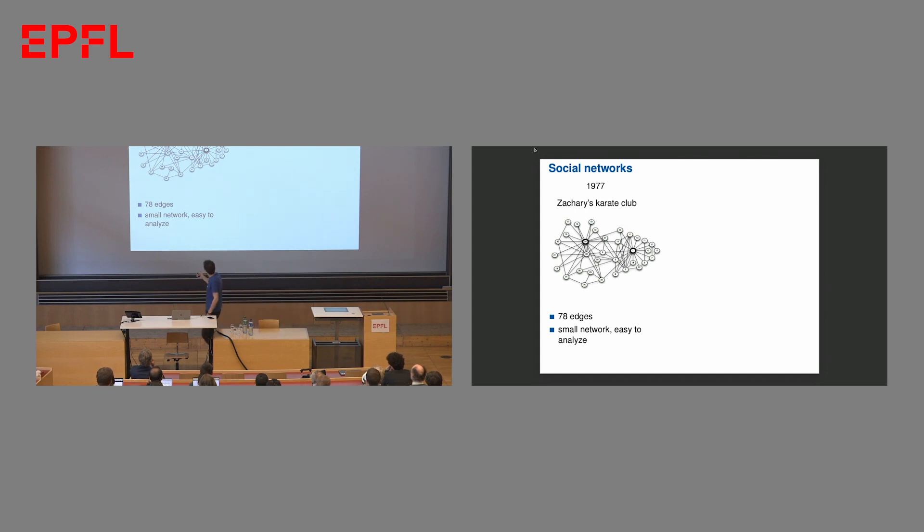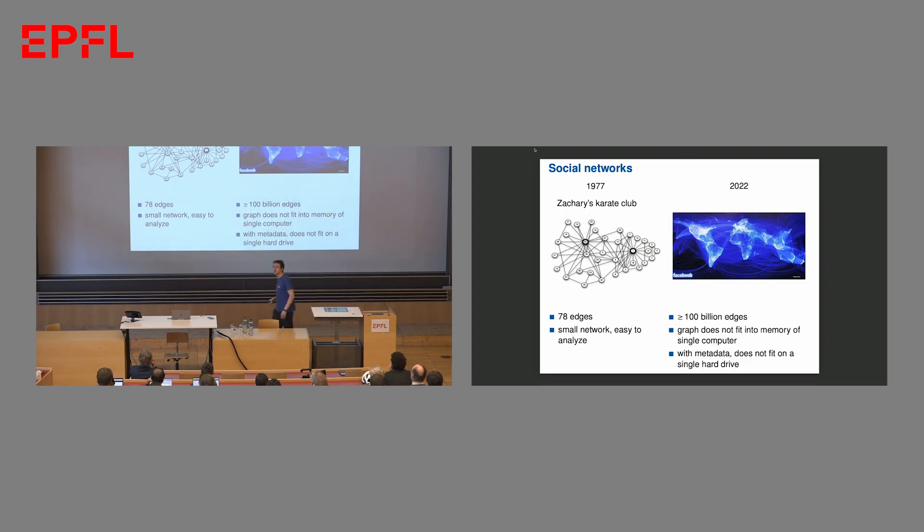When Zachary had to analyze this network in 77, the only thing he had to do is run some max flow min cut computation on this network here. It contains 78 edges. It is not too hard to do this. Just about any algorithm will succeed. But imagine doing this on a social network that is of interest today, like Facebook. It contains a lot of edges and nodes. So it is very challenging to even fit this graph into the memory of a single machine, let alone perform non-trivial algorithmic analysis.